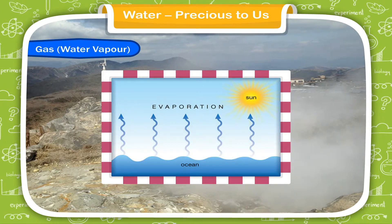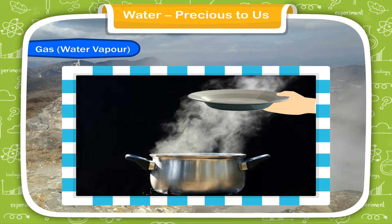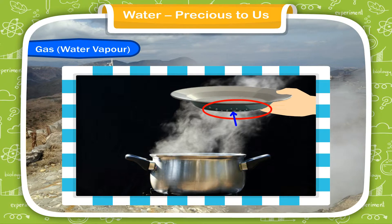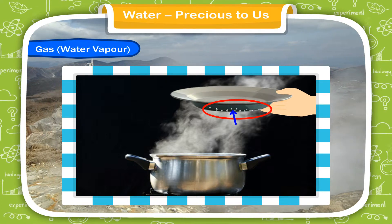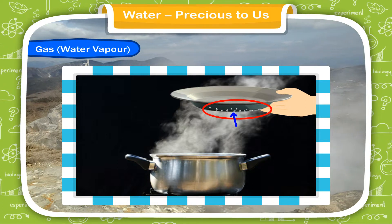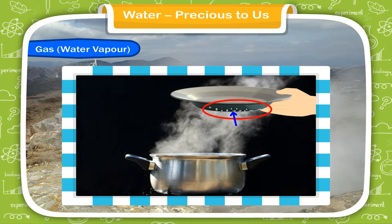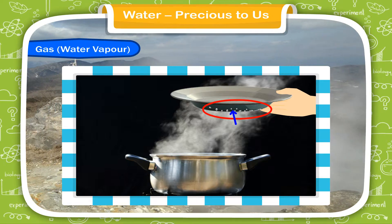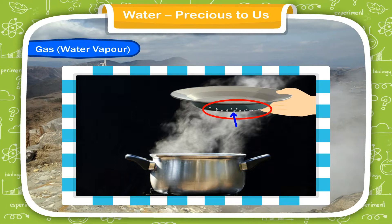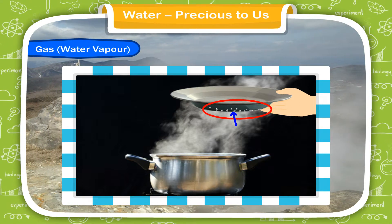Ask any elder to hold a cool plate over water vapor. In a few minutes, you will see many drops of water deposited on the plate. When water vapor touches the surface of the cool plate, it again changes into water drops. The process of conversion of water vapor into water drops is called condensation.